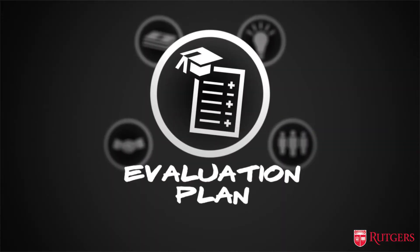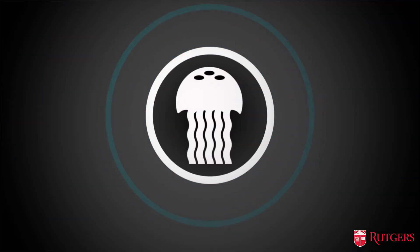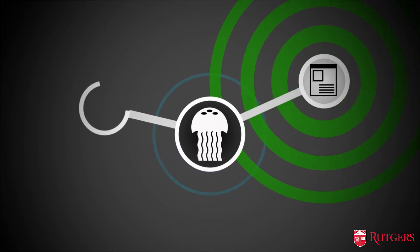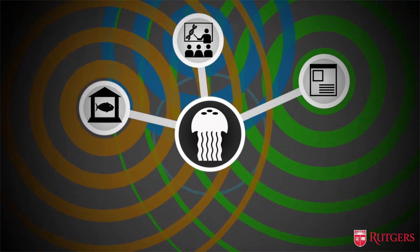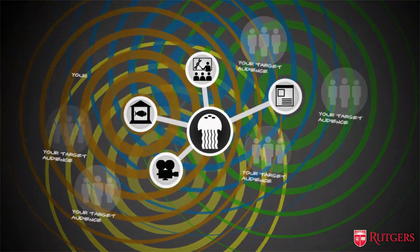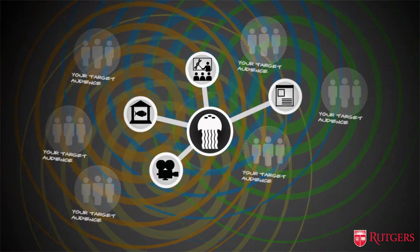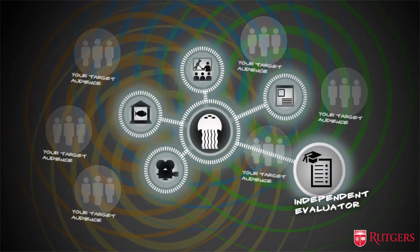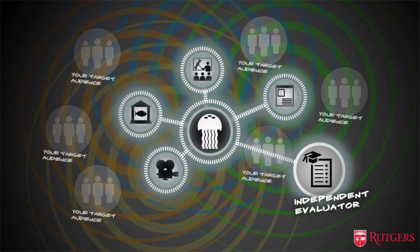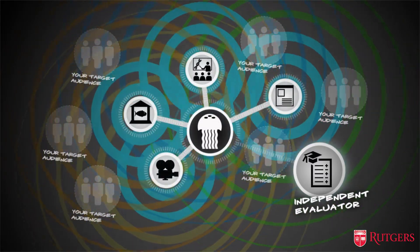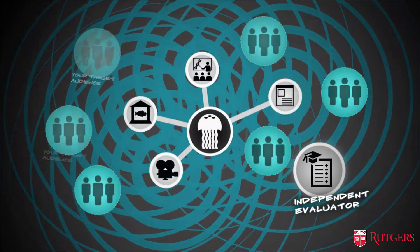Evaluation Plan. You want to know your message is going to resonate with your intended audience. The best way to do that is to conduct evaluation. So even if you've built the jelly research site, partnered with the local aquarium, developed a STEM-rich moon jelly curriculum for K through 12, and have a snazzy moon jelly video — if what you're saying isn't resonating with your intended audience, you haven't met the goals of broader impacts. There are professionals, internal and external to your institution, who can help you collect information on whether you have met your project's objectives.